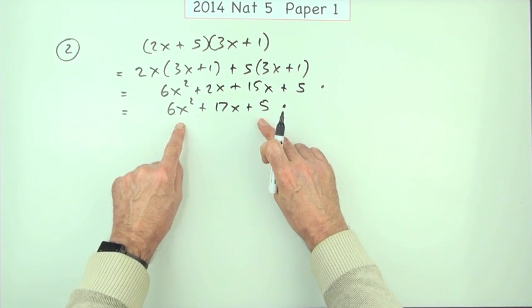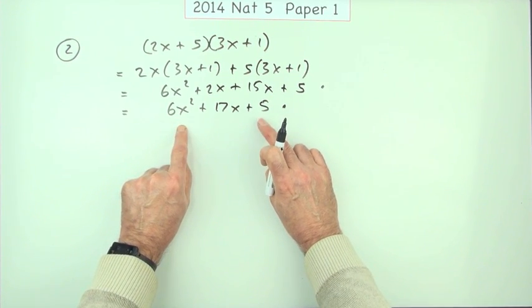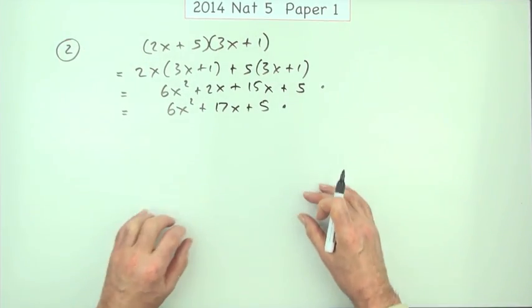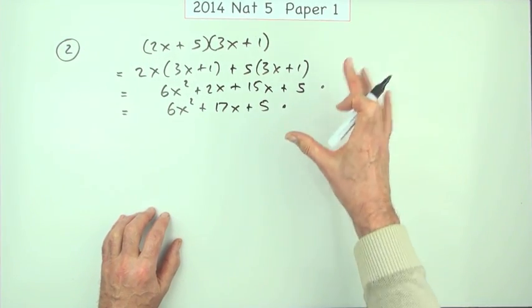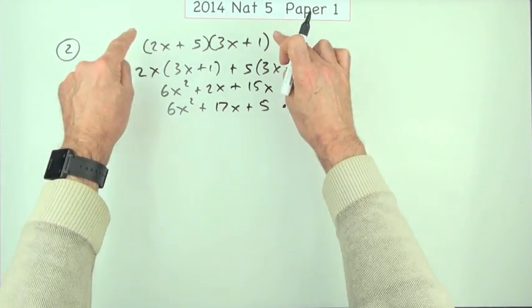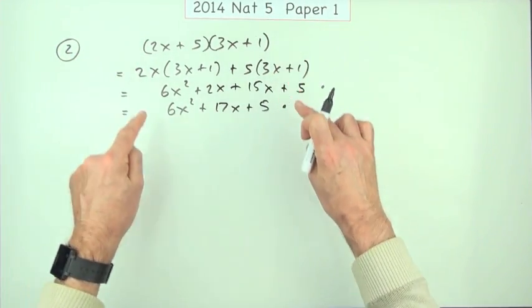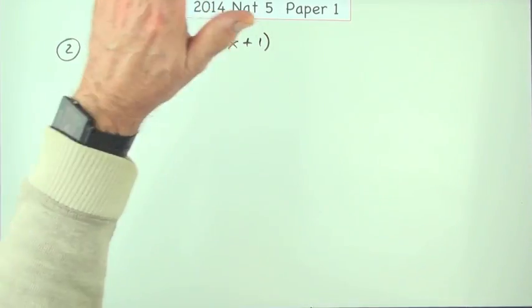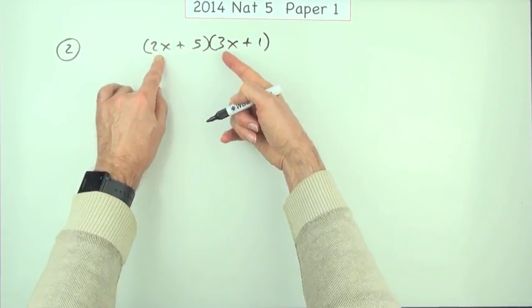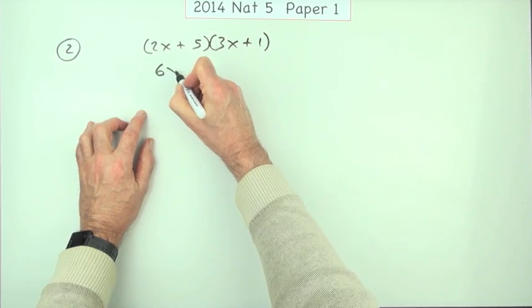However, if you put that down straight away, that would get you the two marks without anything in between. In fact, the way I look at it, that's what you should do. You should be able just to take that multiplication of two linear brackets and get the final answer. So you should be able to say just, the first times the first, 6x squared.